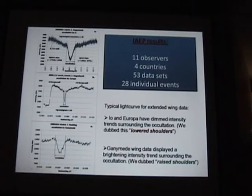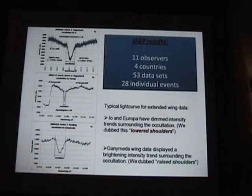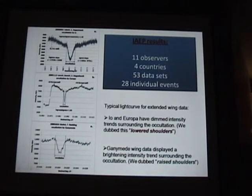I didn't expect that kind of response, but it showed everything we needed to see. The typical light curve response for IO events showed what I call lowered shoulders — a dimming trend on the outside of the occultations. Unexpectedly, Europa had the same event, showing a dimming trend outside the occultations as well. But Ganymede events did not.